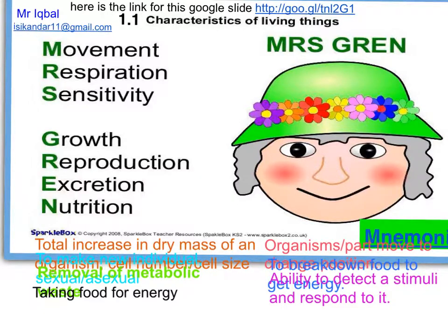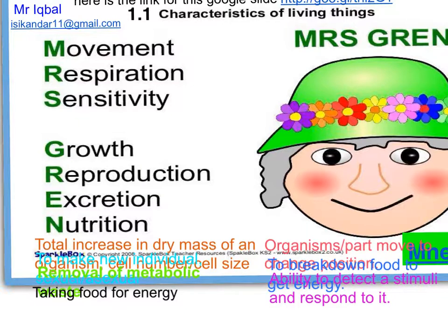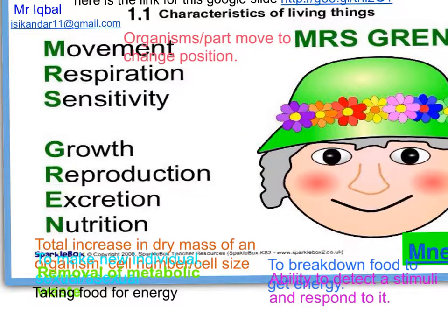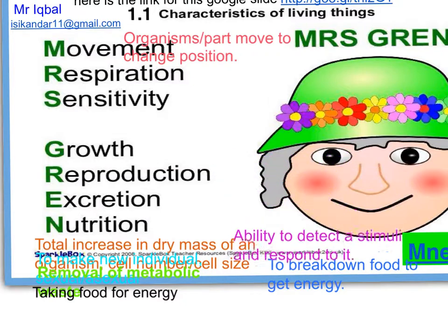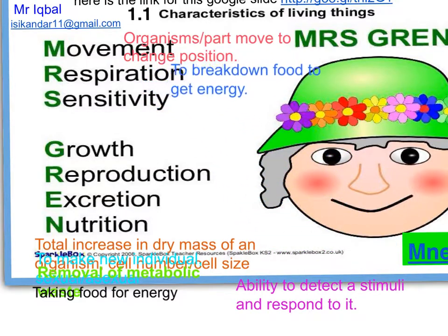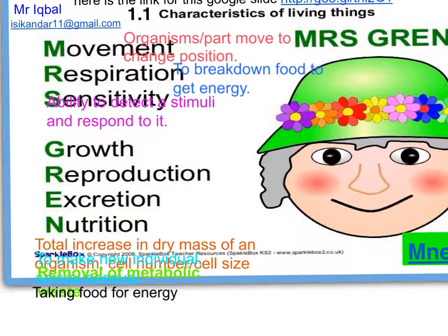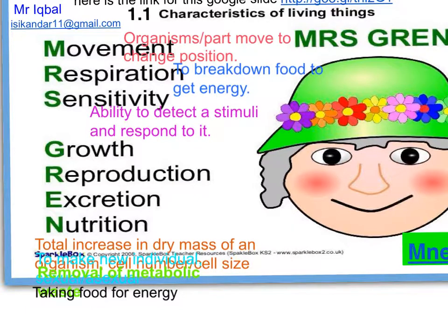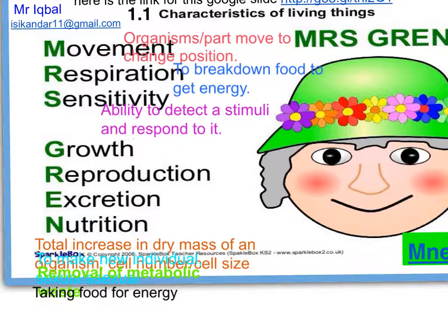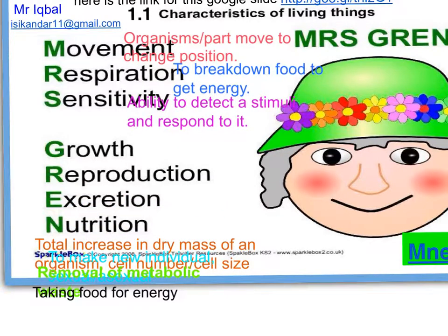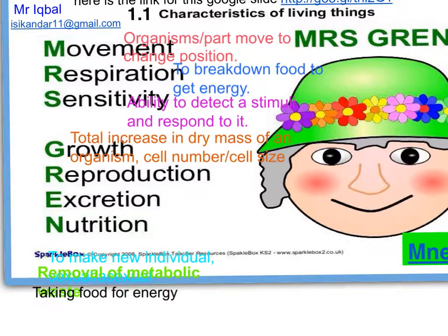Let's look at a simple definition of each basic characteristic of life, also called the processes of life. Movement is when parts of an organism move to change position. Respiration is breaking down food to get energy. Sensitivity is the ability to detect a stimulus and respond to it. Growth is the increase in dry mass of an organism.